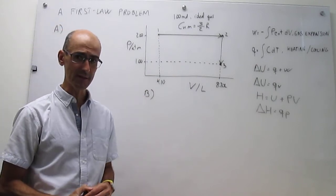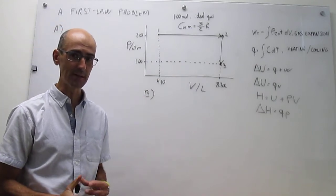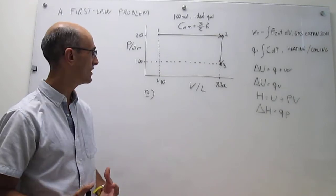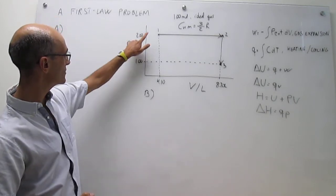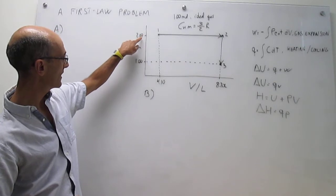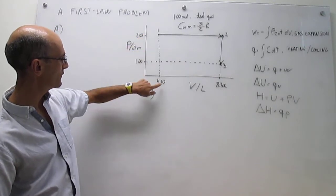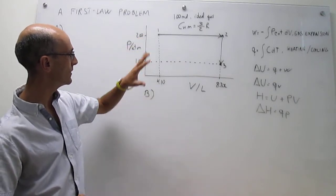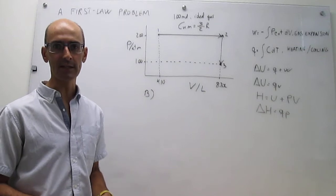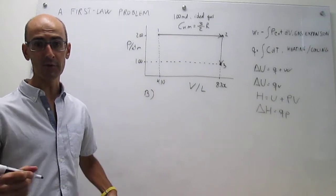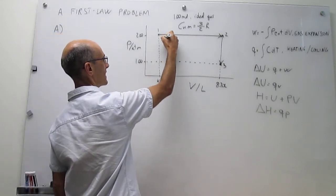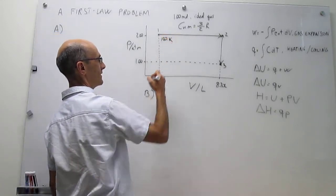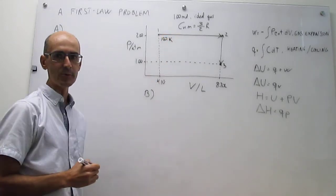We're actually going to need the temperatures because the temperatures change. We have noticed that initially we started with an ideal gas of two atmospheres and 4.10 liters, one mole, so you can use the ideal gas equation of state to calculate what the temperature should be, and you find that that temperature is 100 Kelvin. That is your initial temperature T1.